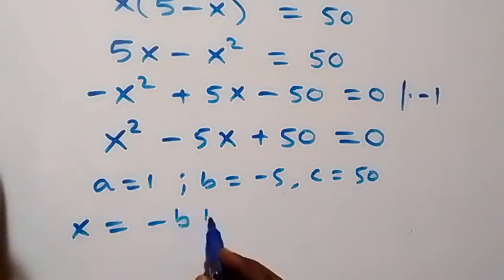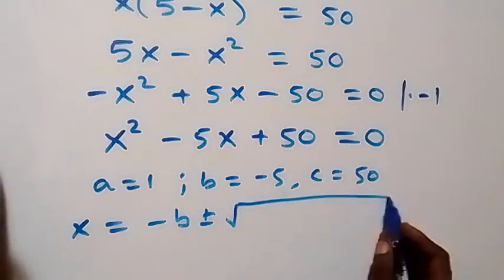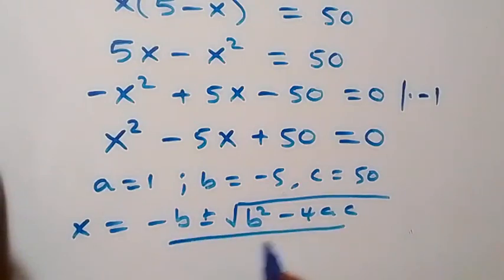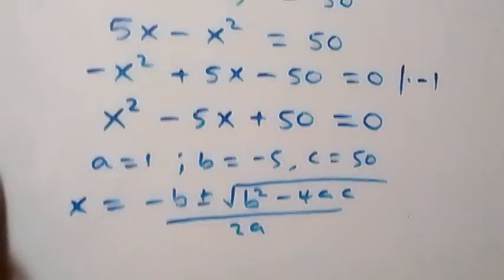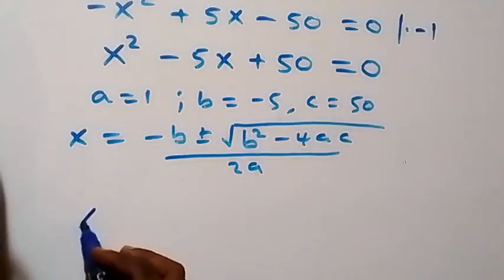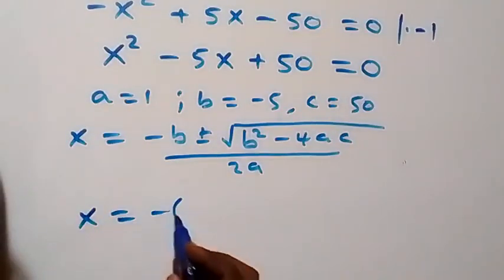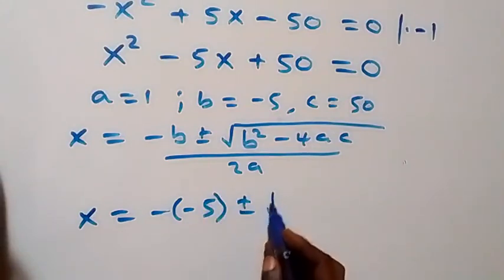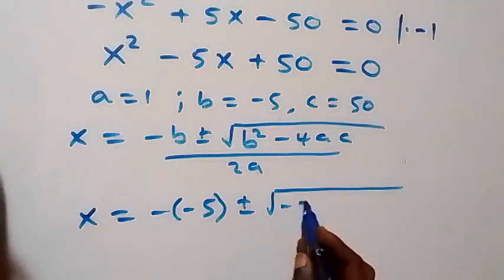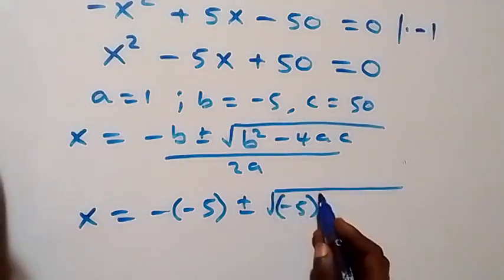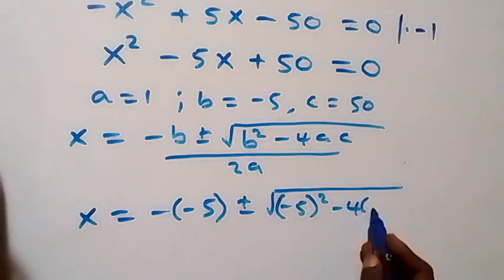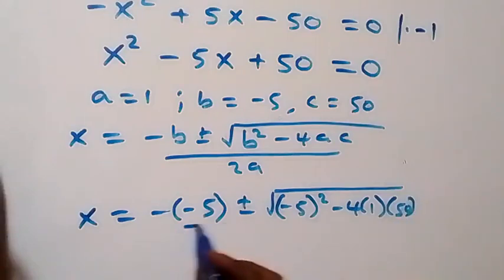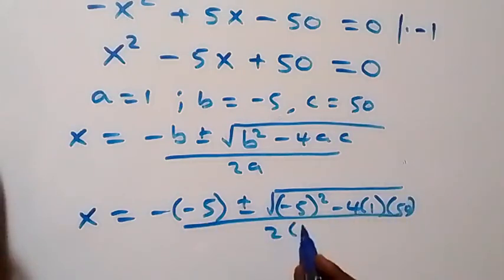Using the quadratic formula, x equals negative b plus or minus square root of b squared minus four ac, all over two a. We now have x equals minus (minus five) plus or minus square root of (minus five) squared minus four times one times 50, divided by two times one.